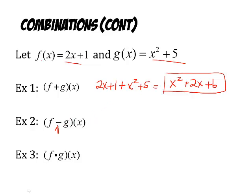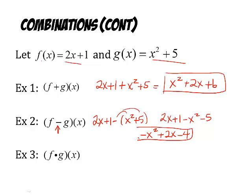Now the second one here is a difference. So be careful with the difference. You're going to take that first equation minus the second equation. I always want you to take this step to subtract it, because you need to see that you're distributing a negative. So it's 2x plus 1 minus x squared minus 5. Again, I combine like terms. Highest exponent goes first. So negative x squared plus 2x minus 4. There it is. That's a difference.